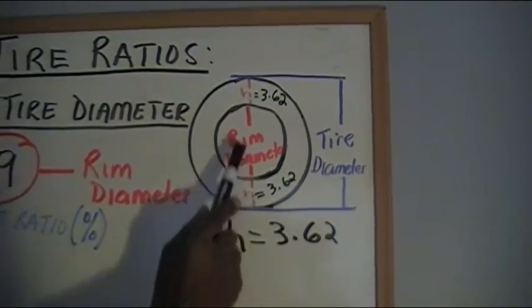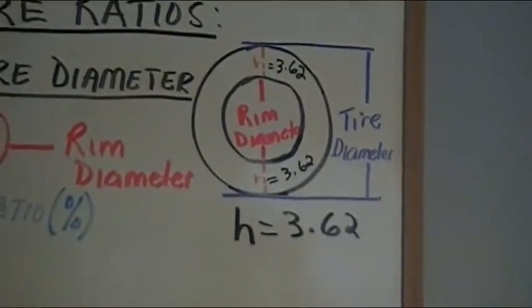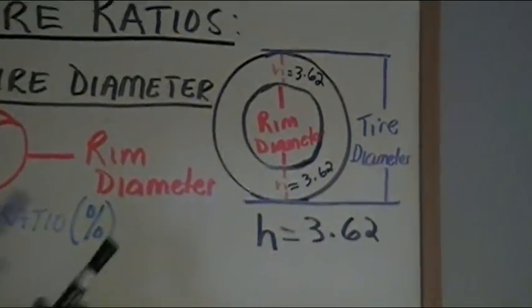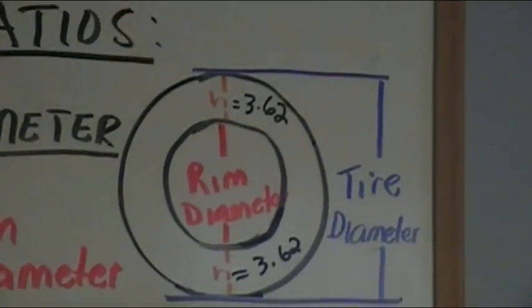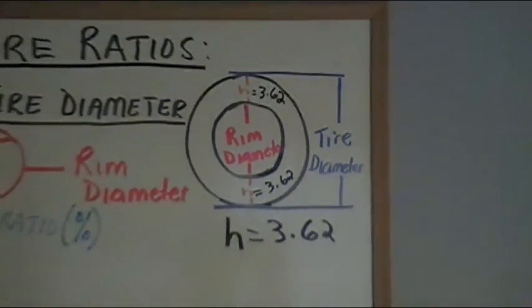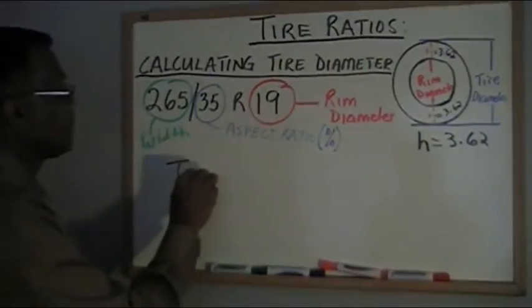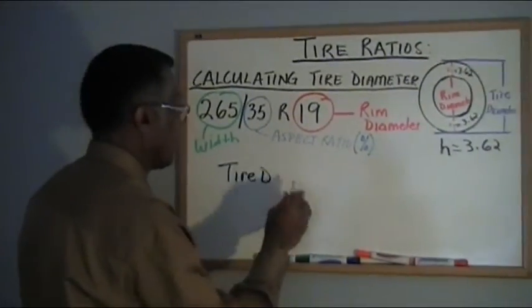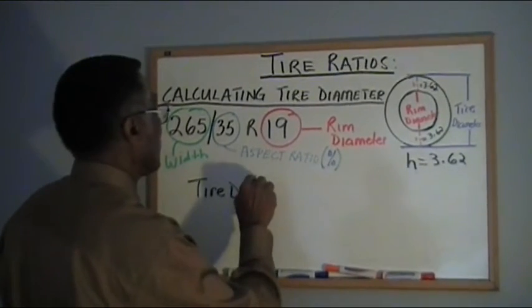From one point to the other, that's the tire diameter. So if you notice here, I've got, like I said earlier, two heights. So it's very simple. The tire diameter, I can write this basically...